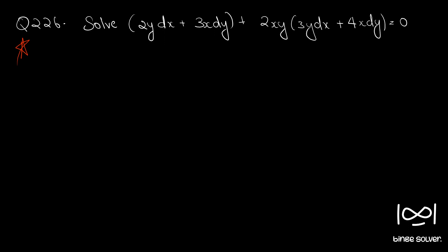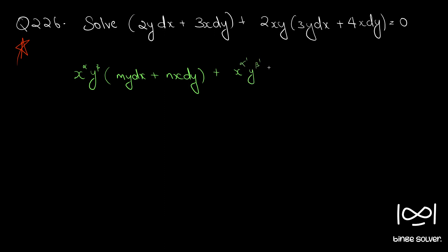We can solve this question using Rule 6. The standard form is x^α · y^β into (m dx + n x dy) plus x^α' · y^β' into (m' y dx + n' x dy) equal to 0. You can see the question is given in this format, so we can directly apply Rule 6.